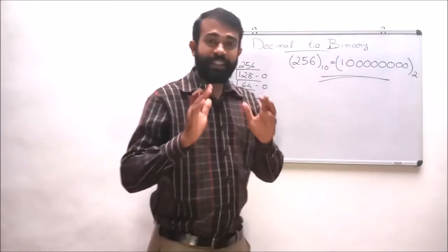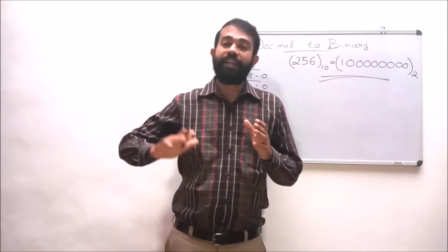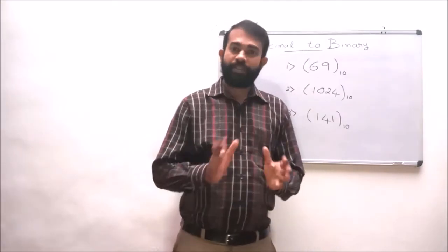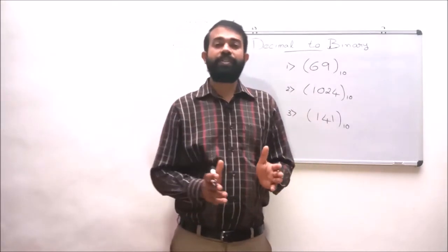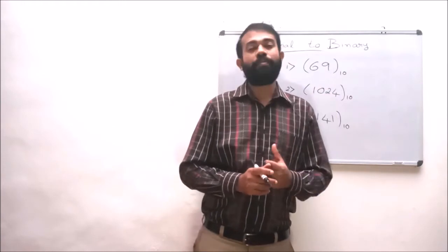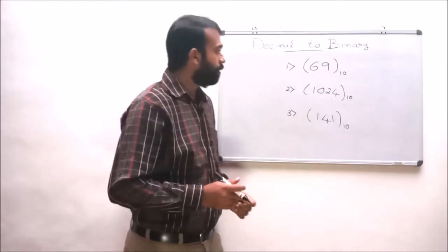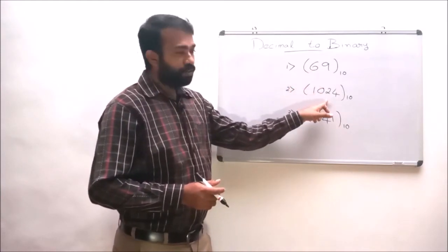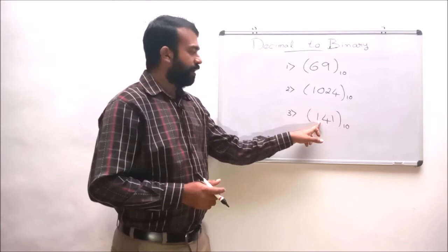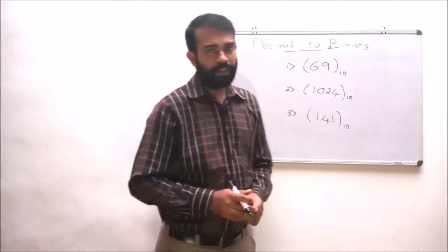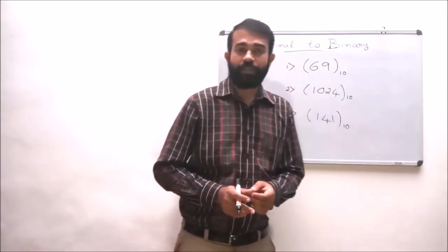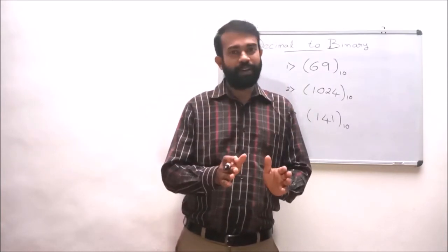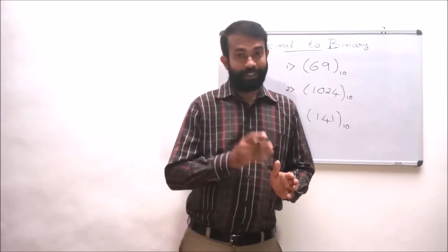My dear students, this is how we convert a decimal number into its binary equivalent. Please go through these assignment questions: convert the following decimal numbers into their binary equivalents — 69, 1024, and 141. In the upcoming lecture, we will discuss how to convert a fractional decimal number into its binary equivalent. See you soon.